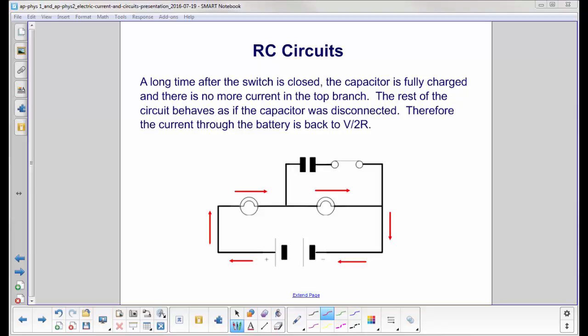A long time after the switch is closed, and we'll deal with what that time is when we get to AP Physics C, this capacitor is fully charged and there is no more current in the top branch. The rest of the circuit behaves as if the capacitor were disconnected. Therefore, the current through the battery and through the two light bulbs is now back to its original current of V over 2R.